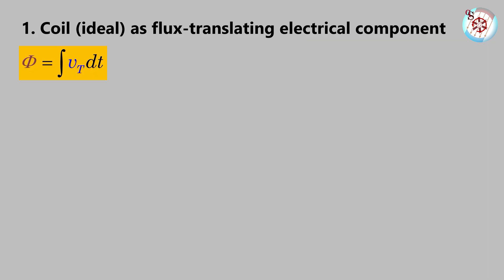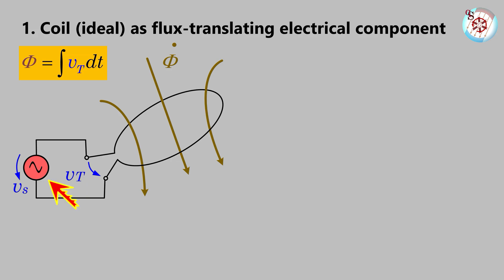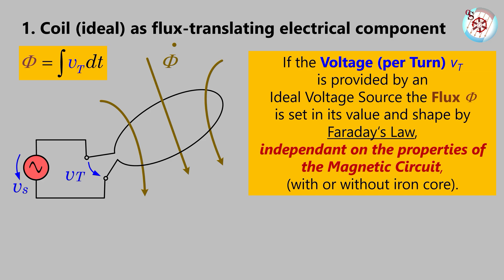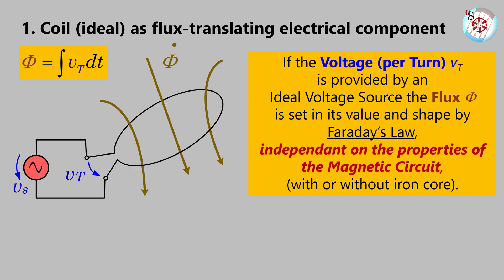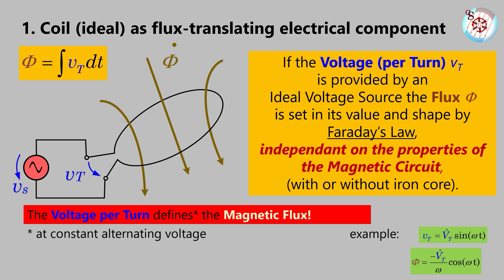Let's further dwell on Faraday's law. If we provide a sinusoidal voltage from a voltage source, such as mains voltage, the flux is set in its value and shape and is not changed by whatever happens in the magnetic field—no matter if something withdraws energy from the magnetic field, adds energy to this magnetic field, or changes its properties, e.g., by inserting iron cores or removing them. Because that is the law: Faraday's law. The voltage per turn defines the magnetic flux. Or, to further emphasize this statement, an electric voltage source translates into a magnetic flux source.